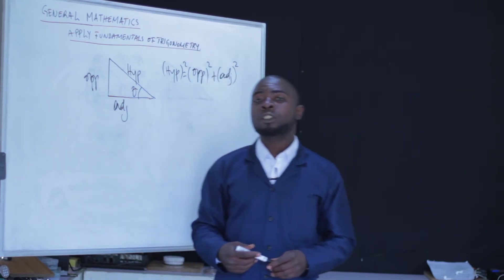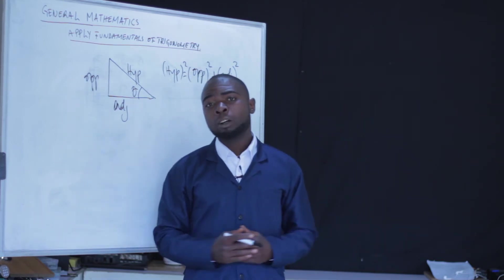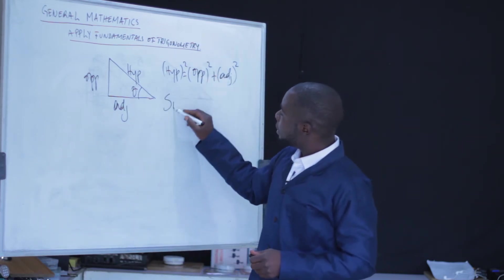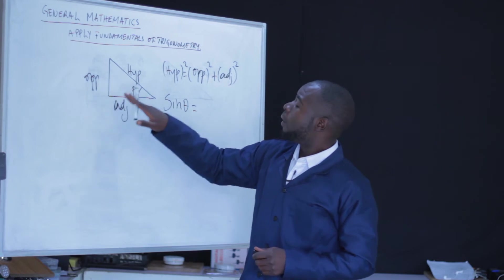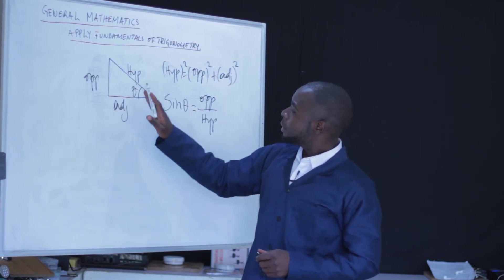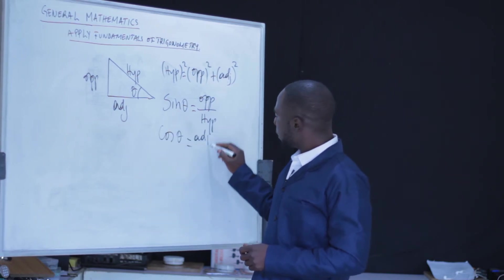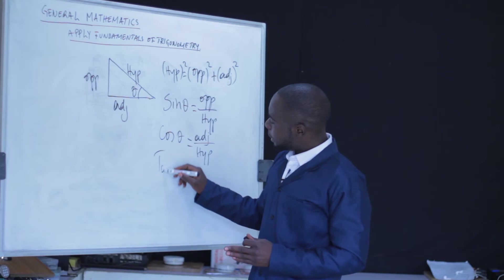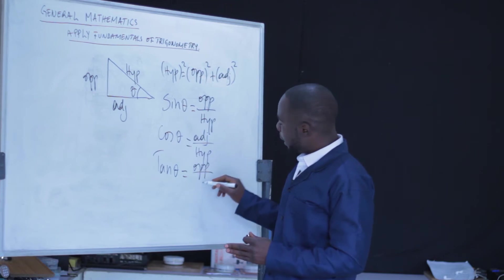We are going to use the trigonometric identities to calculate the angle. We can use sine, cosine, cotangent, and tangent. Sine theta is equal to the opposite side over the hypotenuse. Cosine theta is equal to the adjacent side over the hypotenuse. Tan theta is equal to the opposite side over the adjacent side.